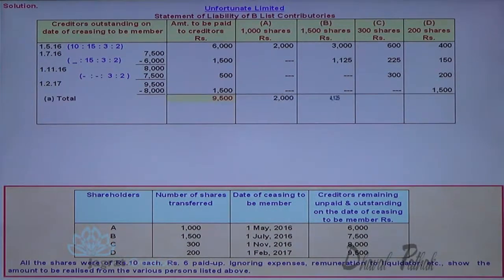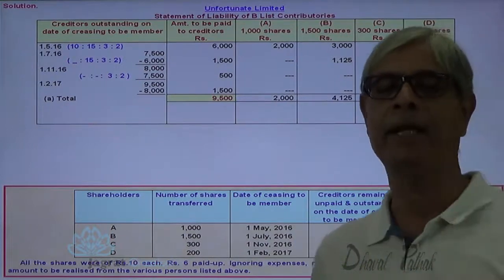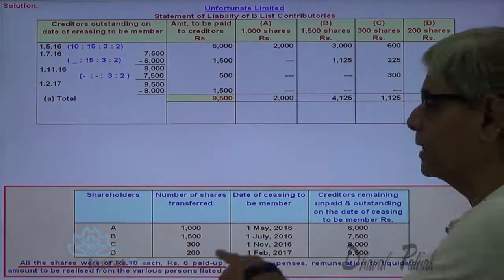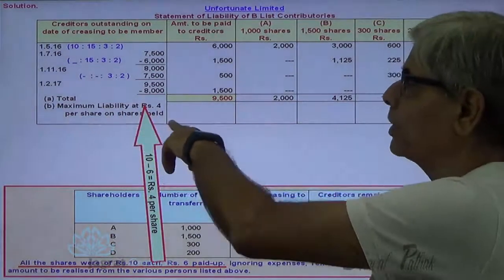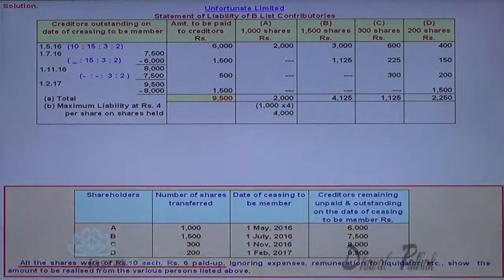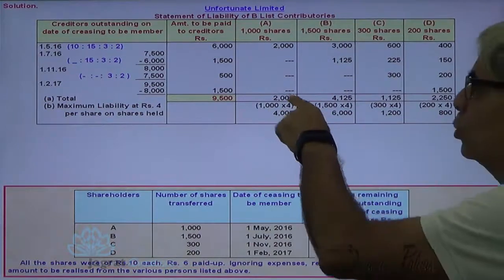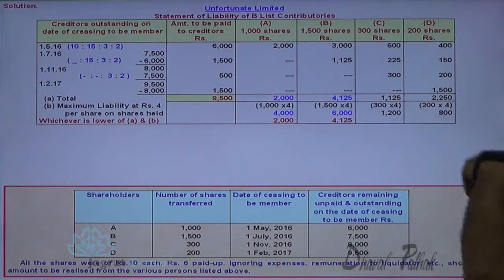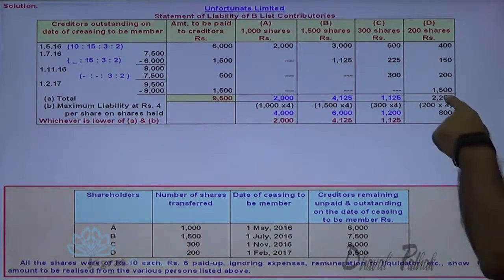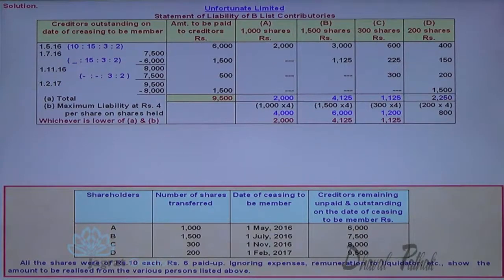Now let me have the total of liability. But this total contribution should not exceed the unpaid amount per share. The share is of Rs. 10, Rs. 6 per share is paid up, so Rs. 4 is the unpaid amount. Maximum liability at the rate of Rs. 4 per share: A — 1,000 × 4 = 4,000 maximum; B — 1,500 × 4 = 6,000 maximum; C — 300 × 4 = 1,200 maximum; D — 200 × 4 = 800 maximum. So whichever is less between the calculated liability and the maximum cap is to be contributed by each of A, B, C, and D.